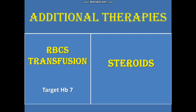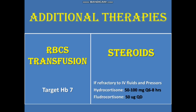Another additional treatment widely used in the United States is steroids. If the patient is refractory to both IV fluids and vasopressors, steroids are an option. The dose of hydrocortisone is 50 to 100 mg every six to eight hours, and we can also use fludrocortisone along with it at 50 micrograms once daily.